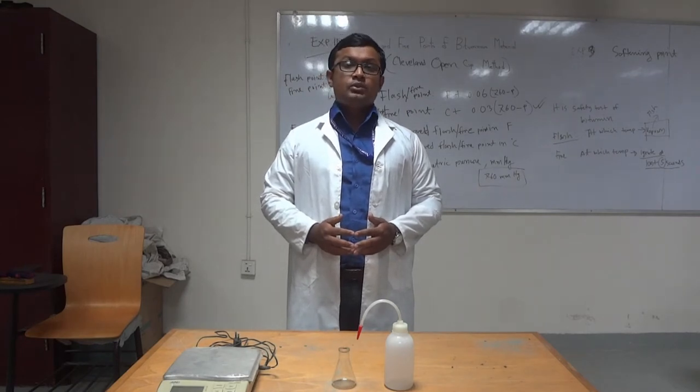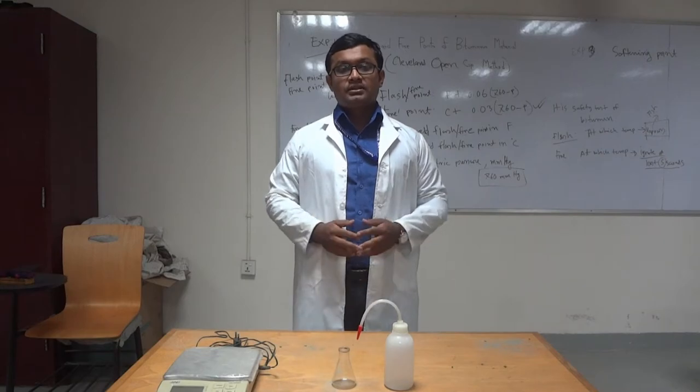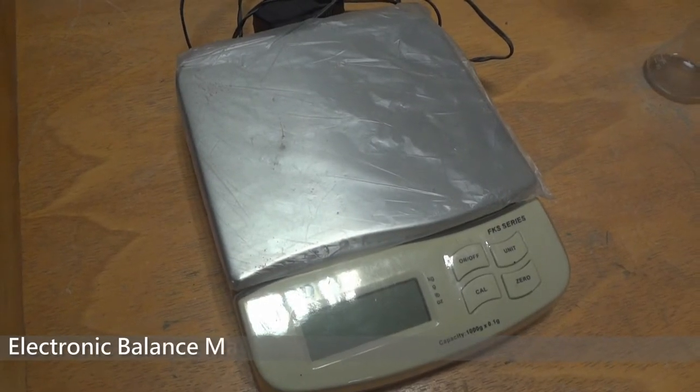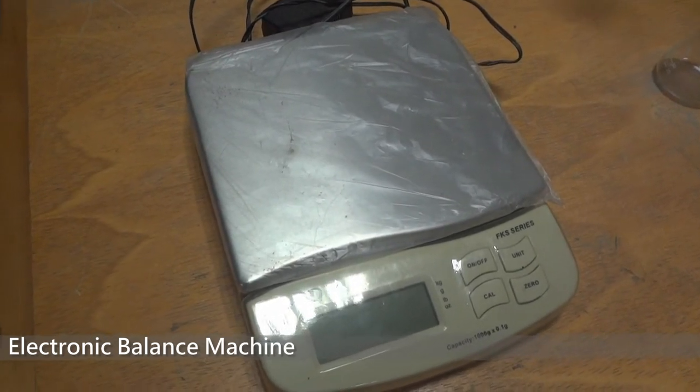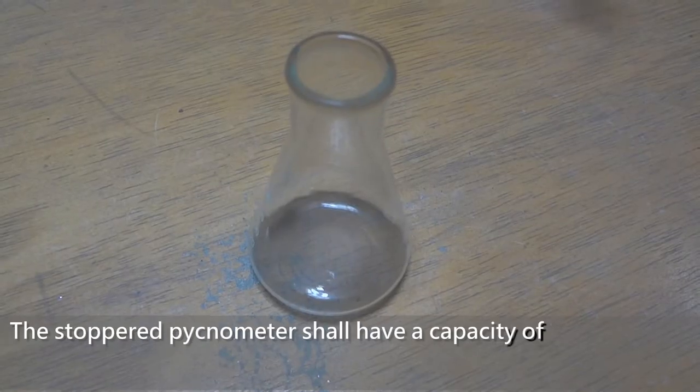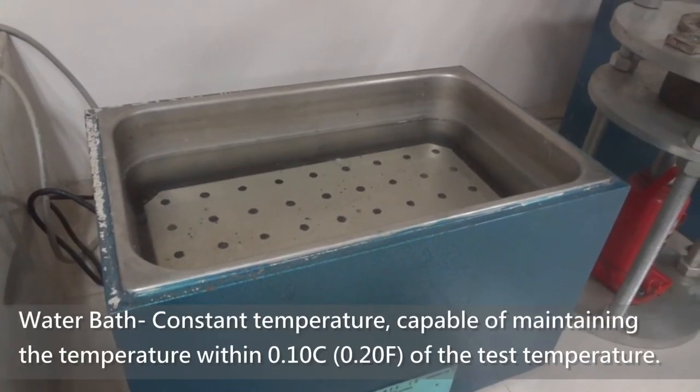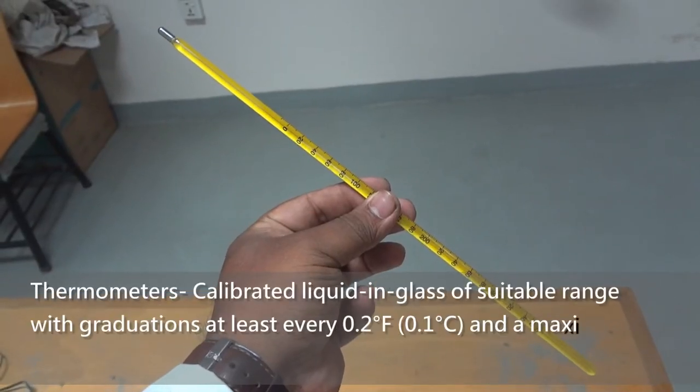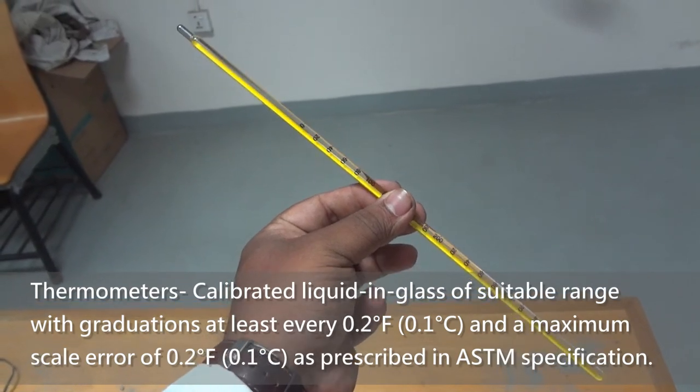Now I will show you the required apparatus for this test: electronic balance of 200 gram capacity with least count of 0.001 grams, pycnometer bottle, a water bath, and glass thermometer having least count of 0.1 degree Celsius.